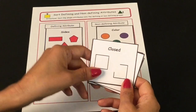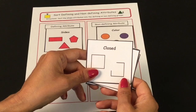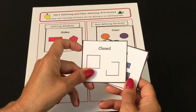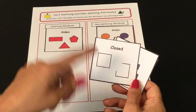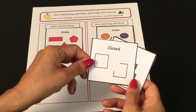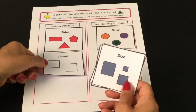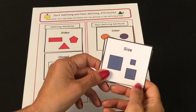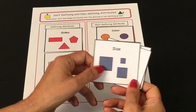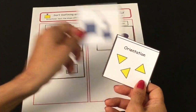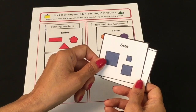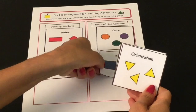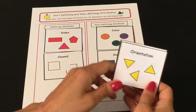Here's the next one: closed. Does it matter if the shape is closed? Is this a defining or a non-defining attribute? It is a defining attribute. The next one is size. Does the size matter? Is this a defining or a non-defining attribute? The size does not matter, so it is a non-defining attribute — it can be any size and it's still the shape.